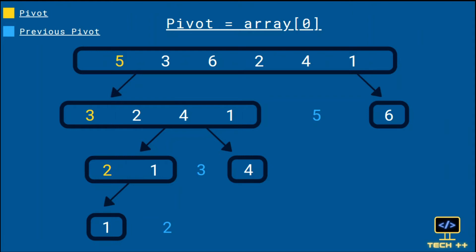First we compare 3 with 5. Since 3 is less than 5, we will put it in the left partition. Next, we compare 6 with 5. Since 6 is greater than 5, we will put it in the right partition. Eventually, we have 3, 2, 4, and 1 in the first partition and 6 in the second partition.